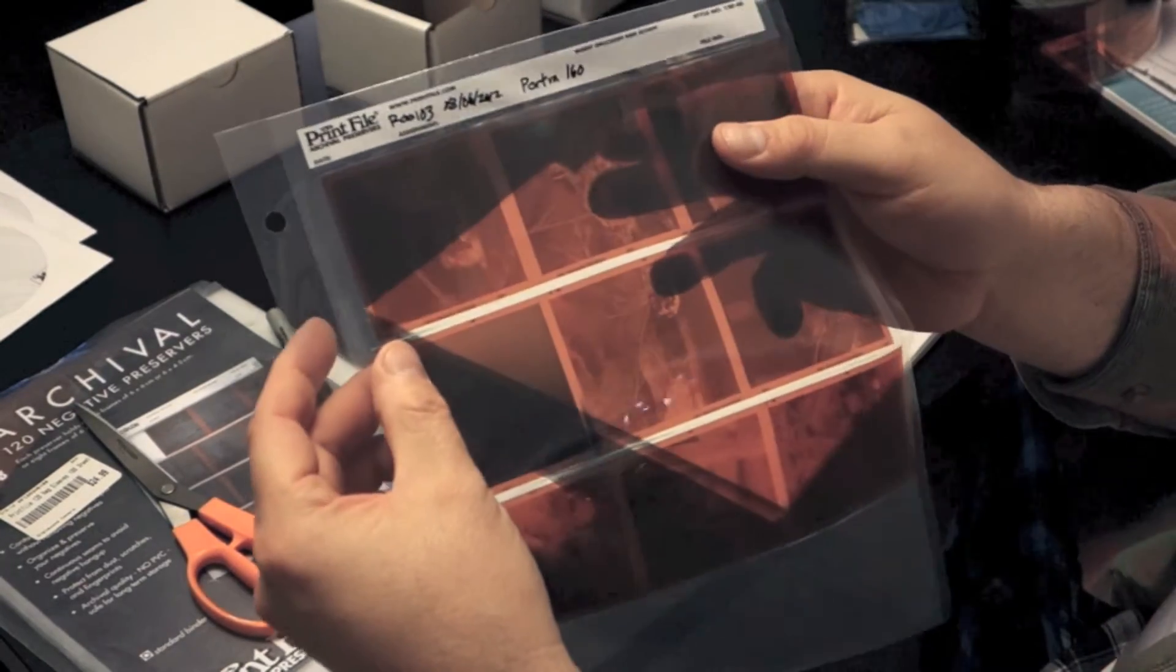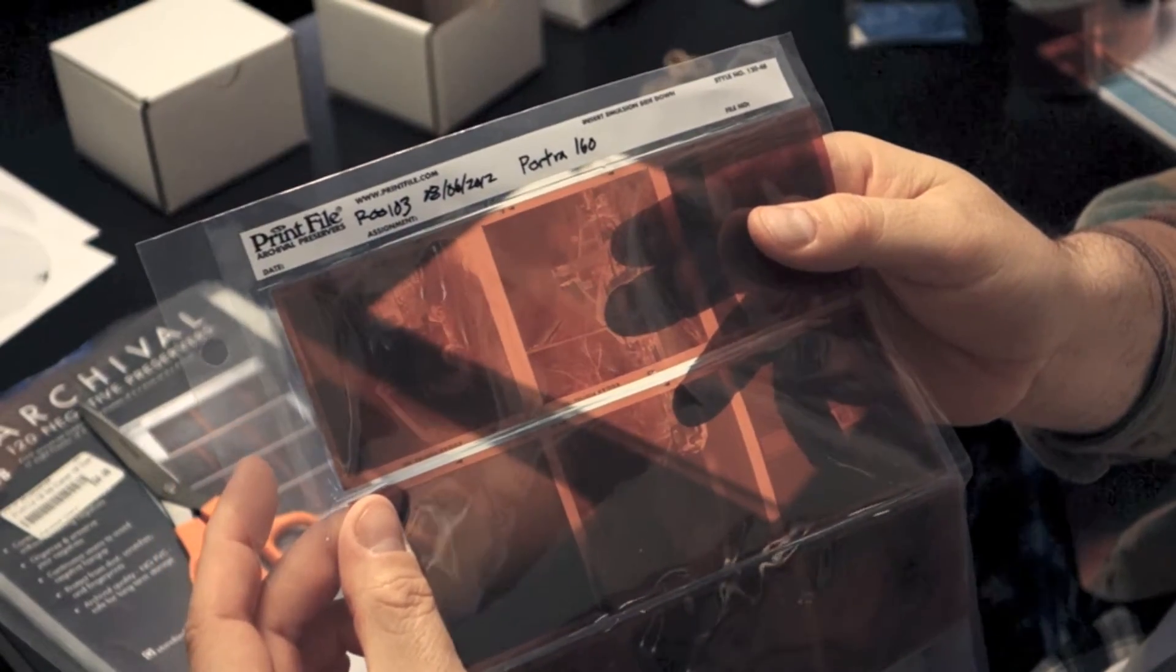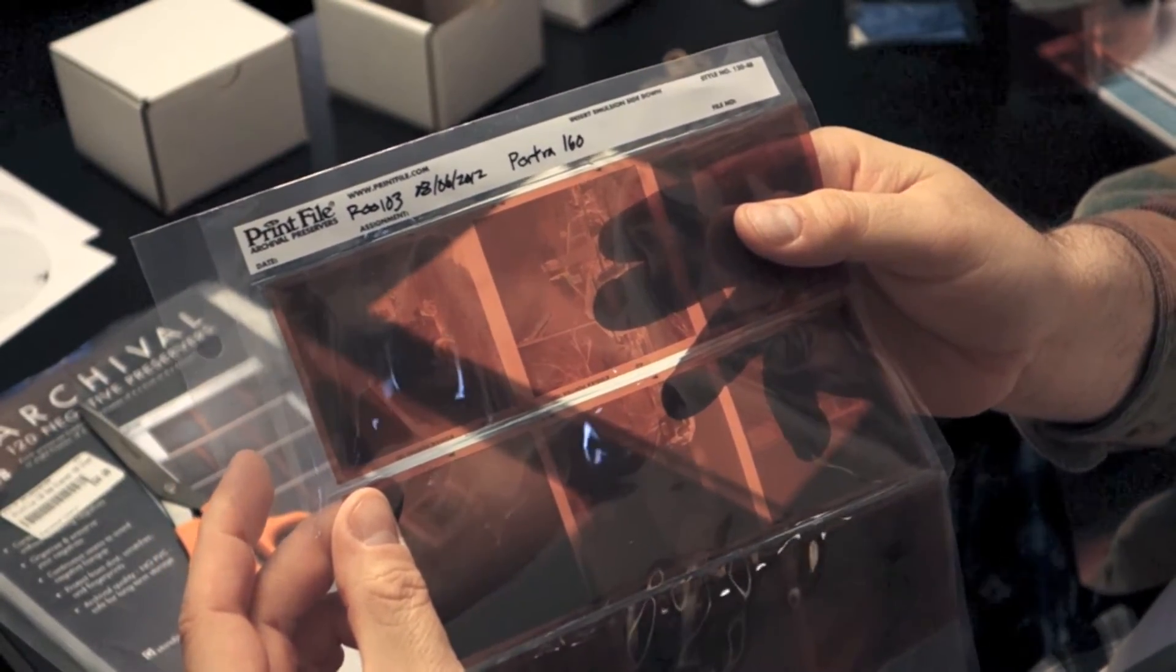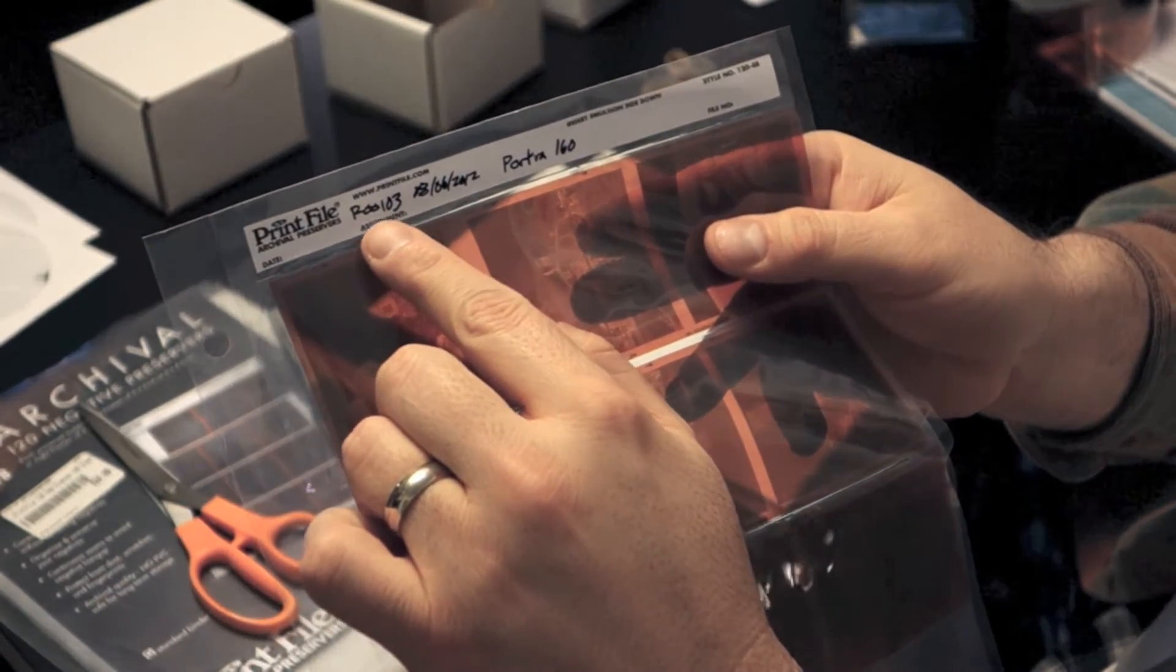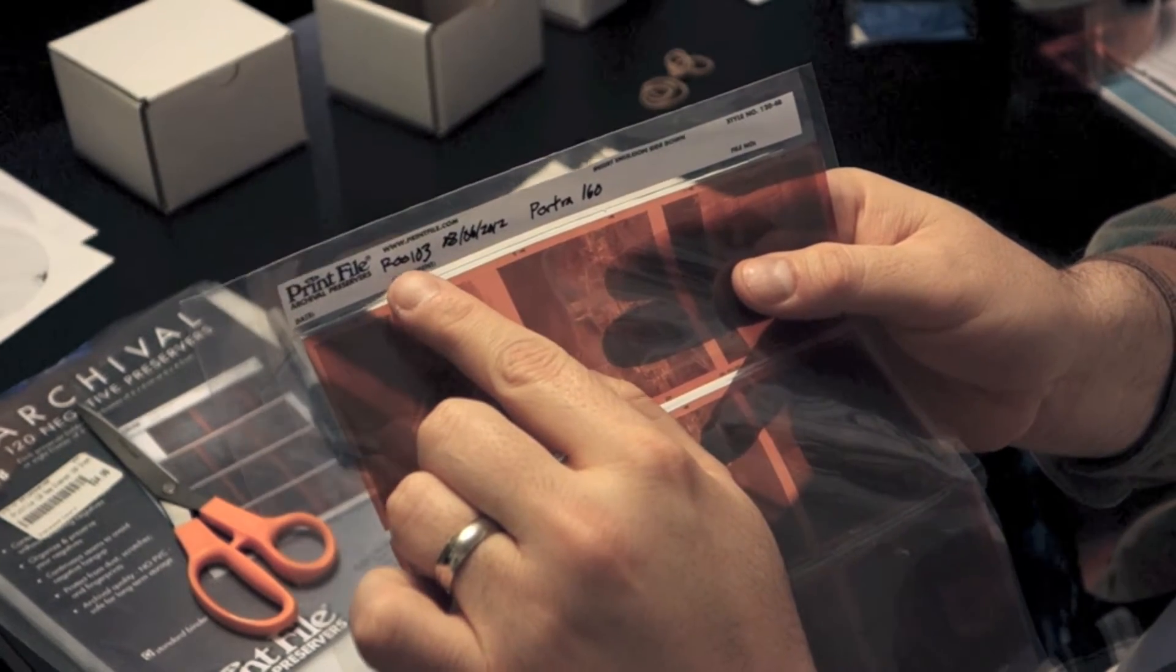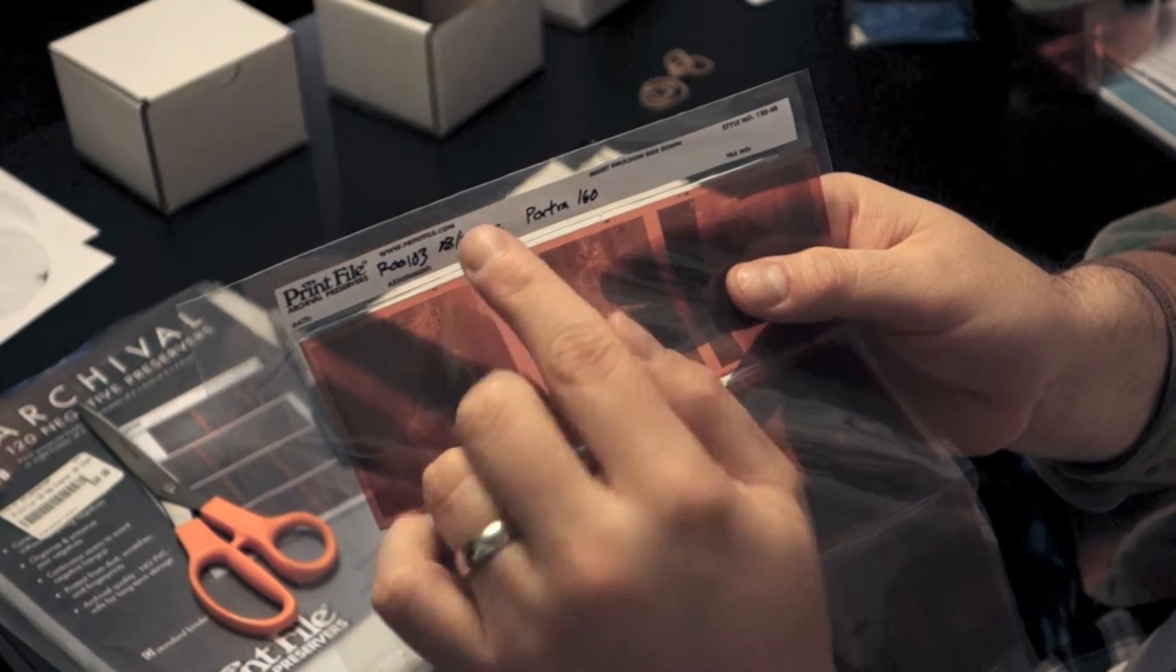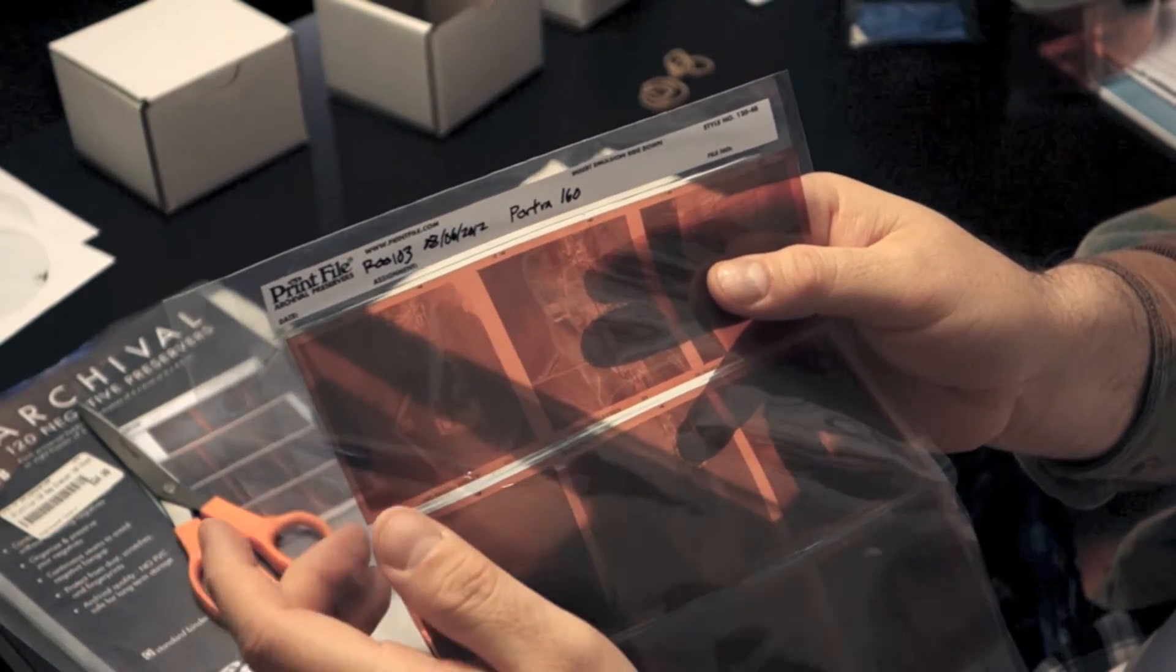So I always label my negatives. I hope I'm holding this right. And what I do is I just organize my negatives by what I call an index. So if you can read my writing here, this is roll 00103. I started at one on my first roll when I started shooting film again. So there's an R00001 in my negative binder somewhere.